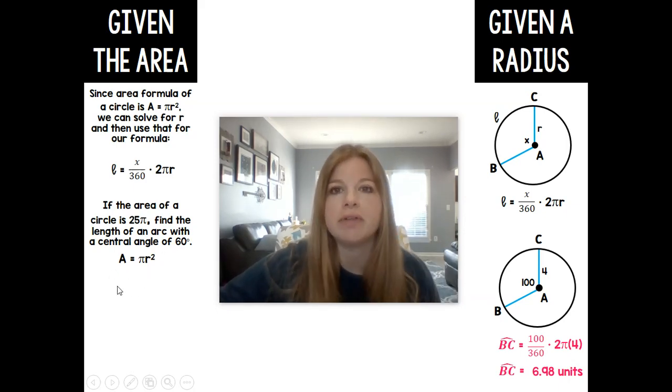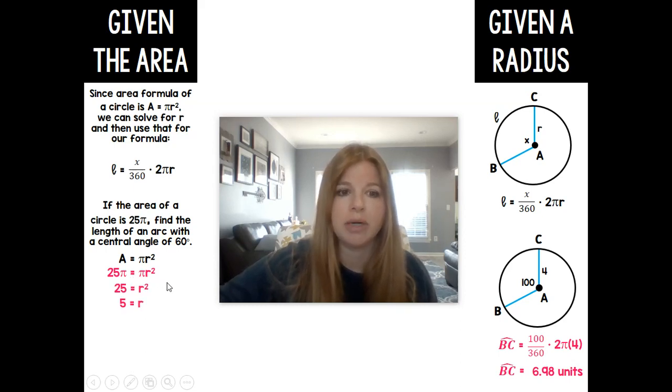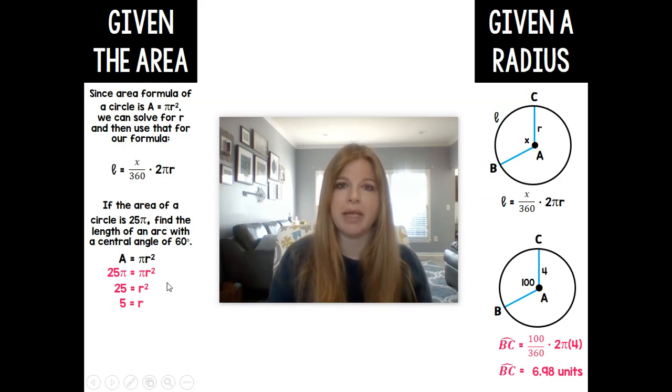So if I know the area of a circle is 25π, I can go ahead and plug that in for my area A. And if I wanted to solve for r, think about it, I would divide both sides by π, and then I would have to take the square root. And it would show me that my radius of that circle would be 5.